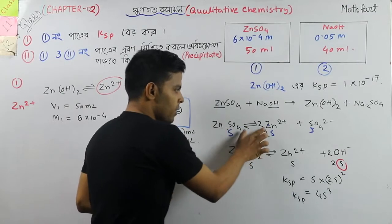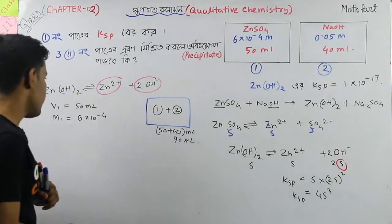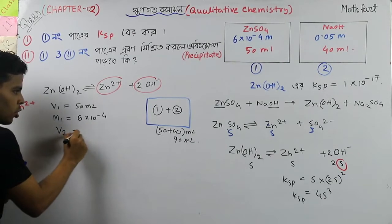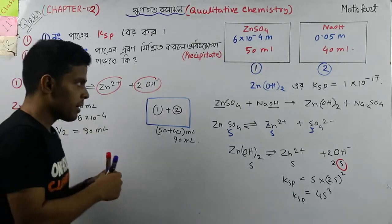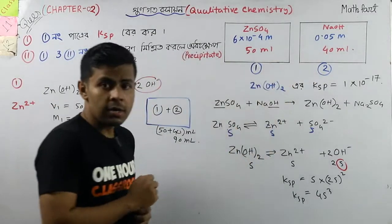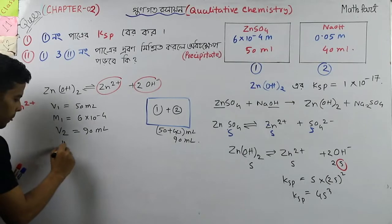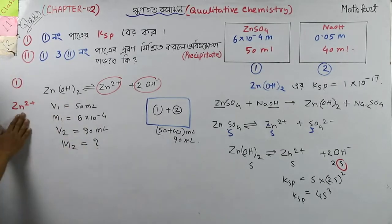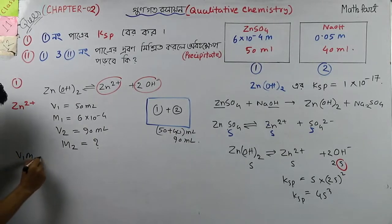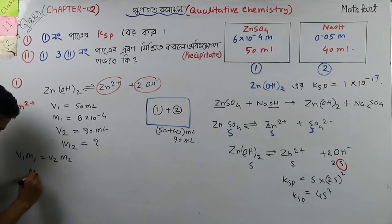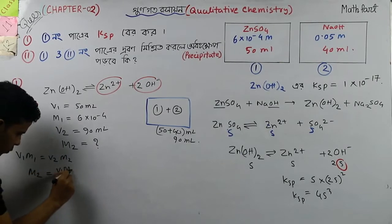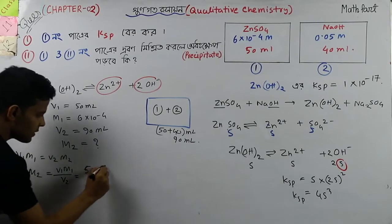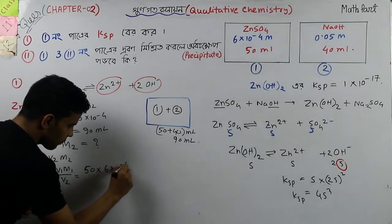So the value of zinc is an amount, and by this term we have to go into the same position. Now V2 is 90 ml. That means the measure is 0 when we have this solution of 90 ml. And M2 is 0. Zing 2 plus = 0. Now we have to take V1 M1 equal to V2 M2. V1 is 50, 50 into M1 is 6×10 to the power minus 4. And V2 is 90.